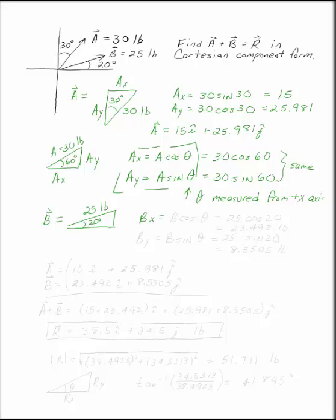BX is going to be B cosine theta, or 25 times cosine 20. BY is B sine theta, which is 25 times sine 20.